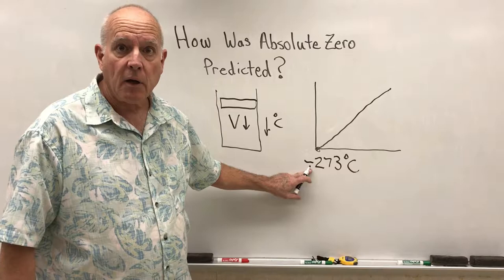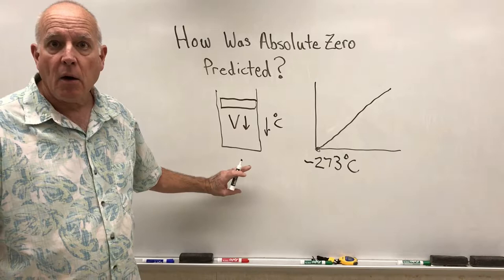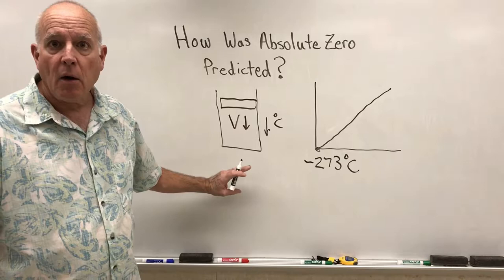That's how absolute zero was predicted over 200 years ago by a scientist doing an experiment, seeing that it was a very good linear relationship, and saying, hey, what does this mean?